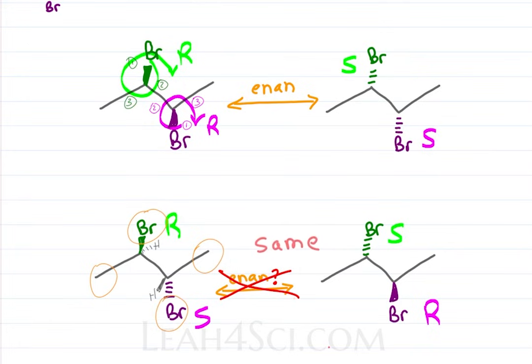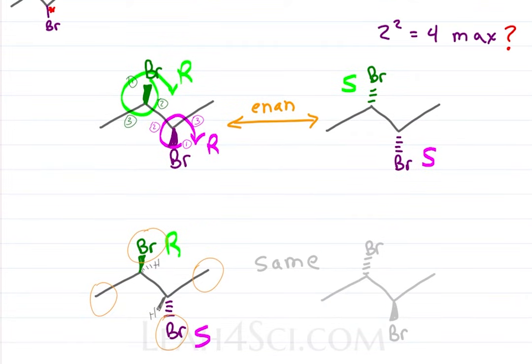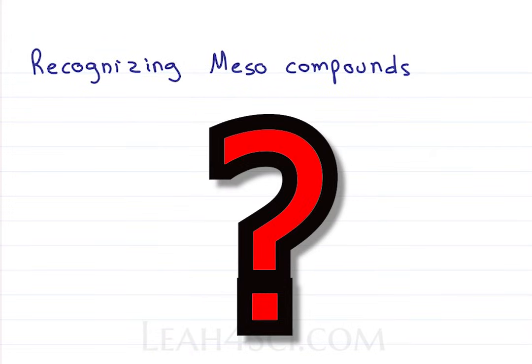Going back to our original example, no, these are not enantiomers. It's exactly the same thing. And if they're exactly the same, we have a total of three rather than four stereoisomers. So what about this equation? Two to the N equals four max, but the meso compound costs us one.